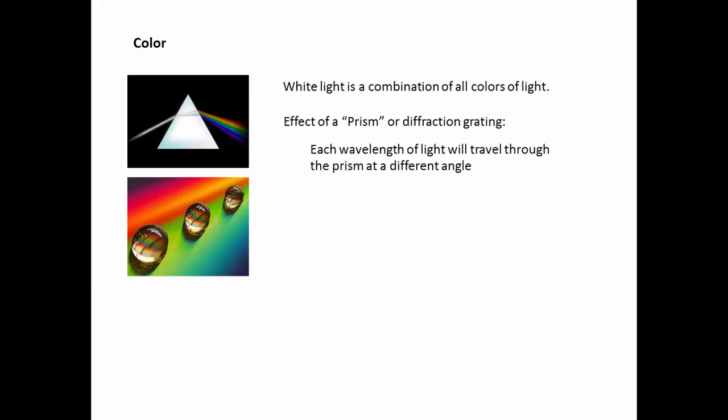Let's investigate what the phenomenon of color actually is. White light is a combination of all colors of light. The effect of a prism or diffraction grating on white light is that as each wavelength of light travels through it, it will not travel through the prism at the same speed and the same angle. Each one will travel through at a different angle. And each wavelength or color of light will exit the prism separate from one another in a different location.